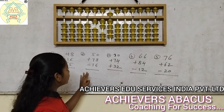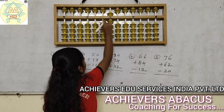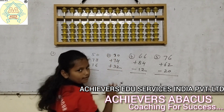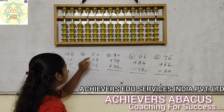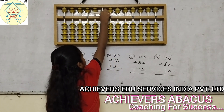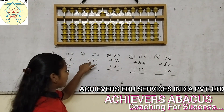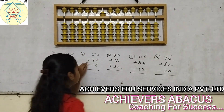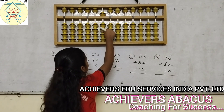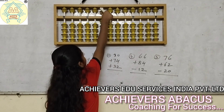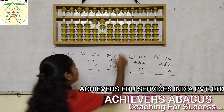Now we will do the second sum. First of all we will clear the abacus and then we will add 50. And then we will add 78. The formula of 7 is: add 2, less 5, and add 10. Then add 8.